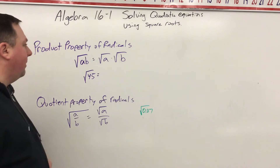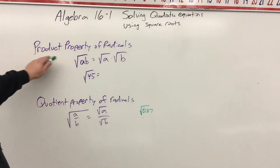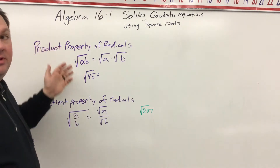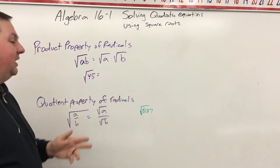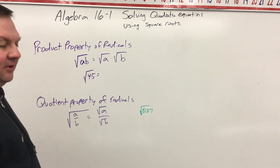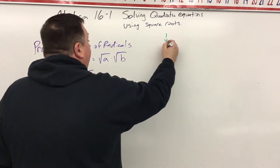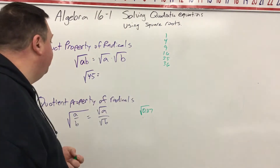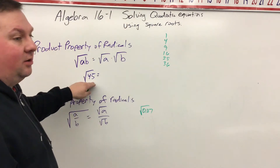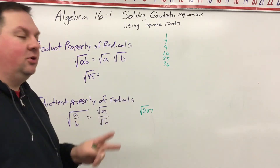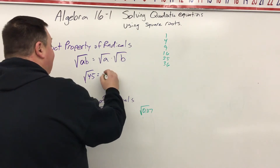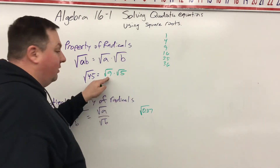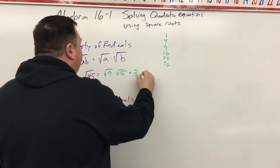There are a couple of properties that you're going to have to put in your notes right away, like the product property of radicals. That means if you take the square root of a number times a number, it can be written as the square root of a times the square root of b. So for example, you want to find your perfect square roots, which would be like 1, 4, 9, 16, 25, 36, and the list goes on. So for 45, I would say the square root of 9 times the square root of 5, which we can simplify because the square root of 9 is 3, so this would be 3 times the square root of 5.